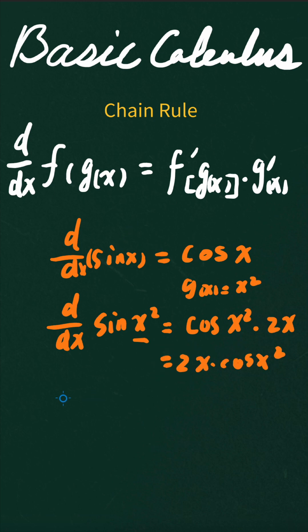So we can also apply this formula to a power function. If you want to find the derivative of (2x plus 5) raised to the power of 3, then according to the formula, you have to find the derivative of f(g(x)), which is 3 times (2x plus 5) raised to the power of 2, n minus 1, right? So plus 2.